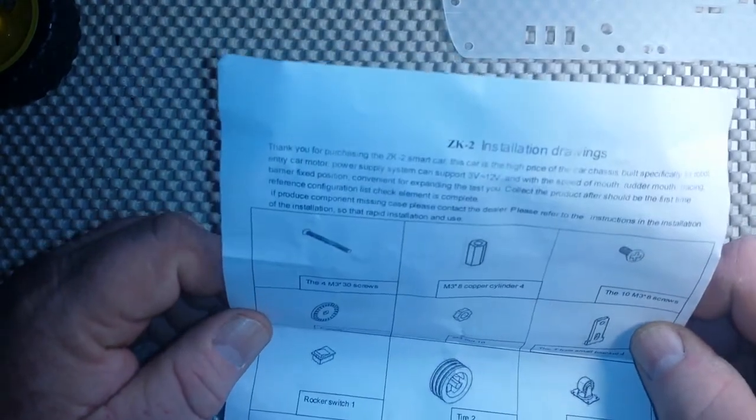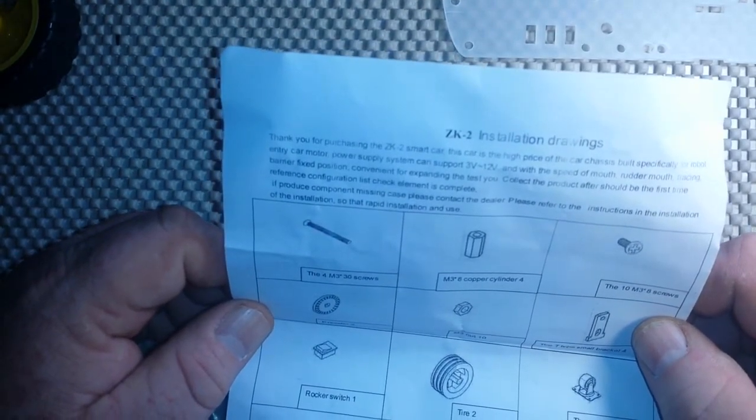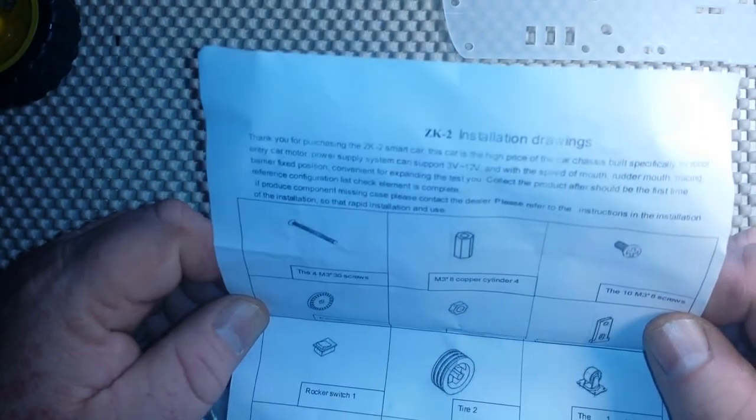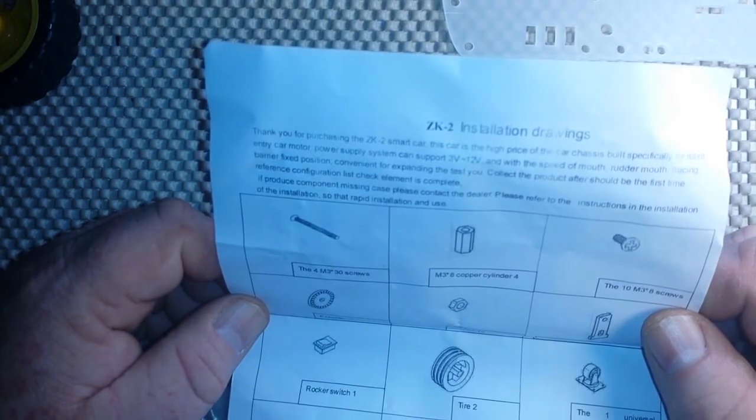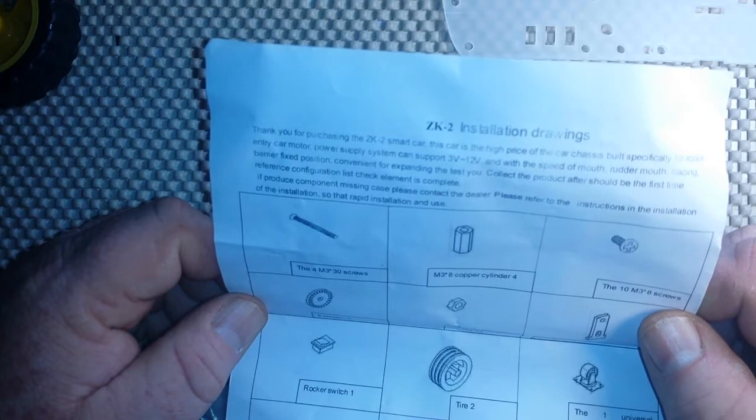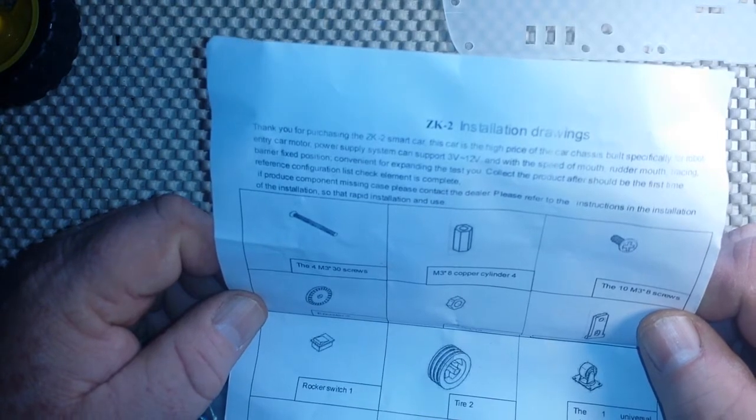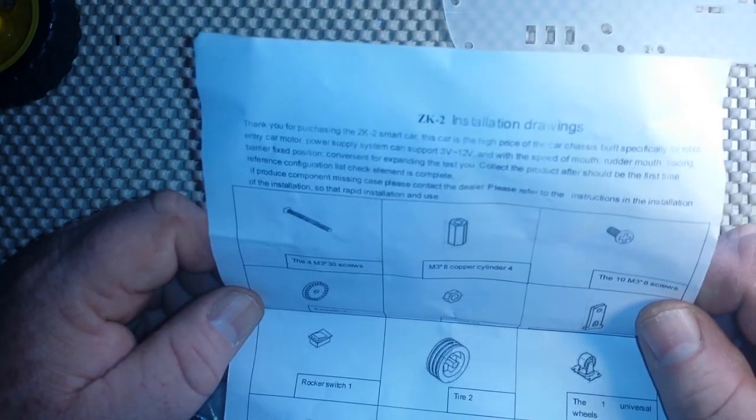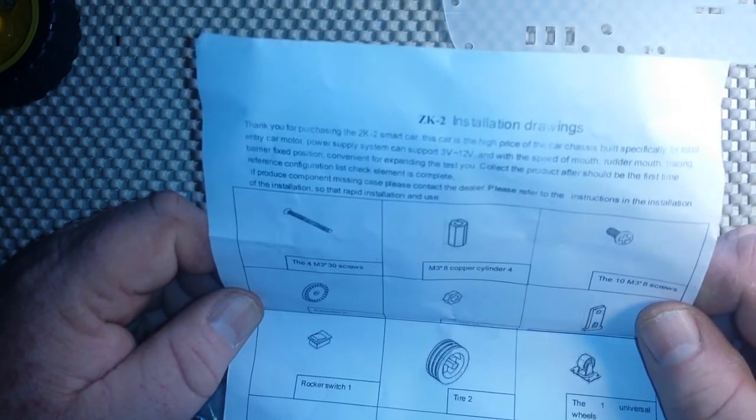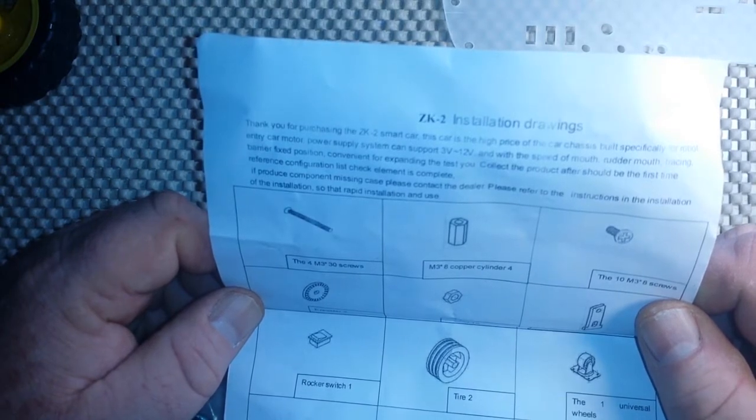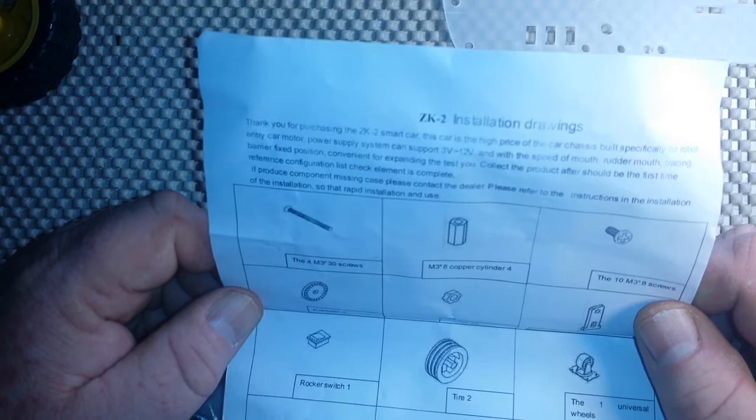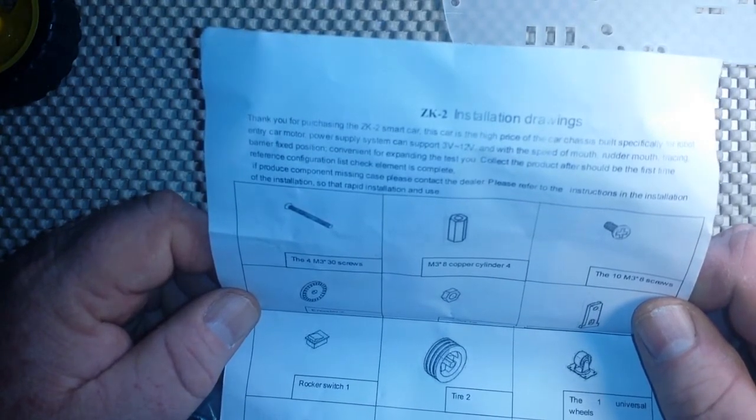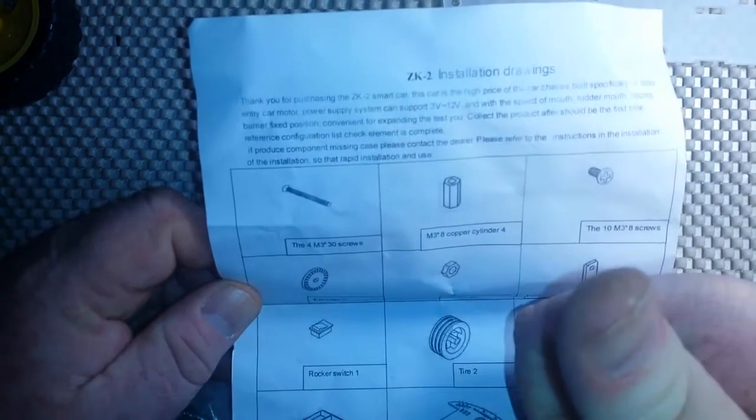Thank you for purchasing the ZK-2 smart car. This car is the high price of car chassis, built specifically for robot entry car motor, comma, power supply system can support 3 volts to 12 volts and with the speed of mouth, comma rudder mouth, comma tracing, comma barrier fixed position, semi-colon, semi-colon, convenient for expanding the test U, period. Collect the product after should be the first time reference configuration list check element is complete. Right on.